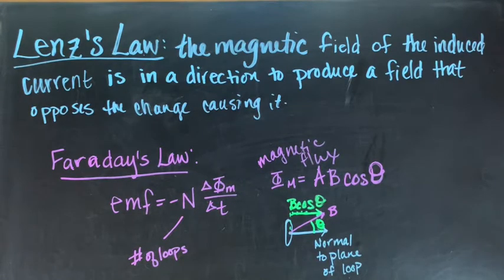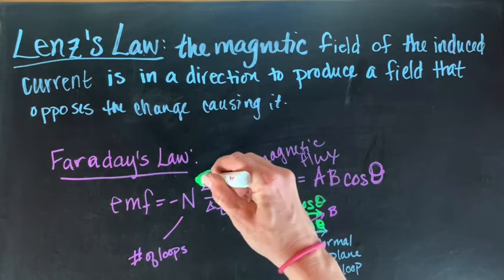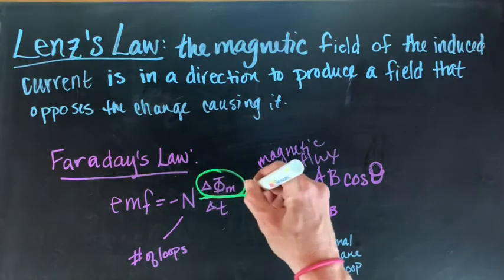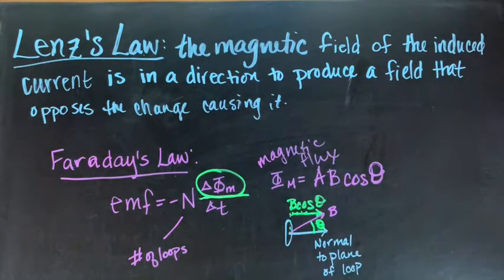He figured out that the magnetic field of the induced current is in a direction to produce a field that opposes the change causing it. So if your magnetic field, it opposes the change in your magnetic field, not necessarily just the field itself. While this is helpful for figuring out direction of induced current, it doesn't really help us figure out anything else. So we have to deal with Faraday's law. Faraday's law tells us that the voltage is equal to the negative of the number of loops times this change in magnetic flux divided by your change in time. It's a rate of change of your magnetic flux.